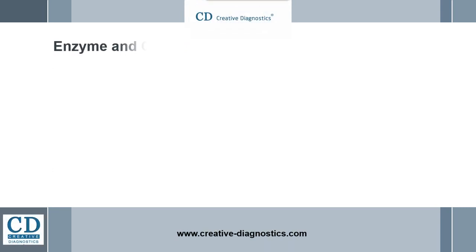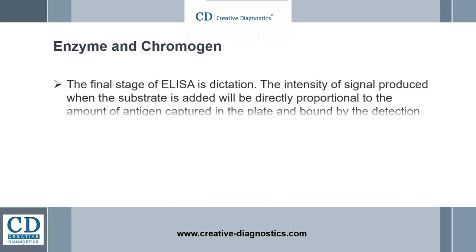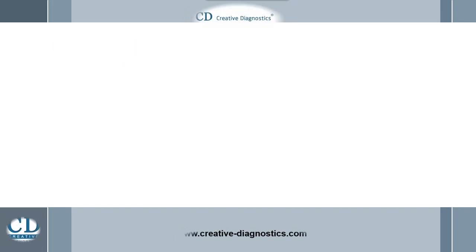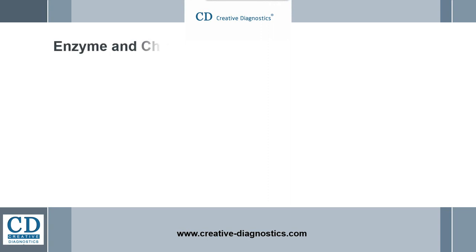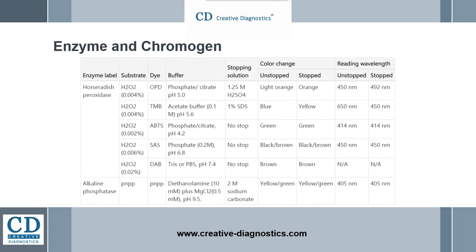The final stage of ELISA is detection. The intensity of signal produced when the substrate is added will be directly proportional to the amount of antigen captured in the plate and bound by the detection reagents. The most commonly used enzymes and substrate or chromophore systems used in ELISA, and the color changes with relevant stopping agents, are as follows.